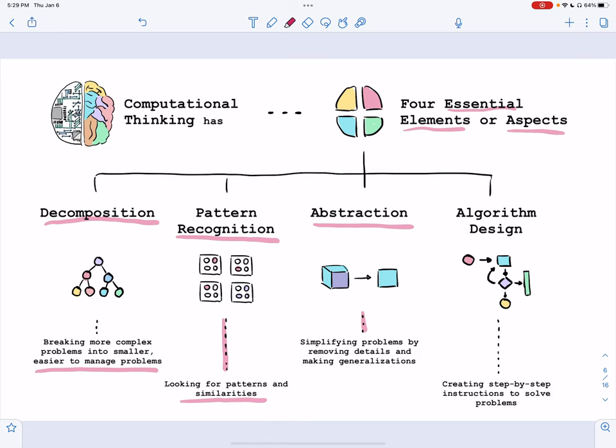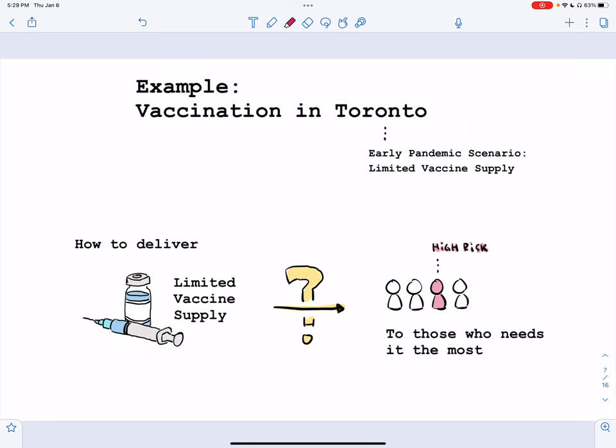Abstraction, which is really about simplifying problems by taking away details and making generalizations and building simplified models. And finally, algorithm design, which is about creating step-by-step instructions to solve problems. So let's consider an example of how this works.